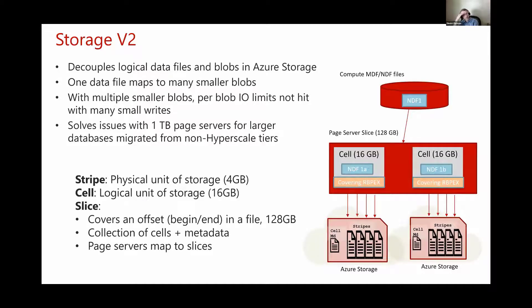Looking at Storage V2 more closely: a database file (MDF or NDF) is split into multiple 128 gigabyte slices. Each slice consists of cells, where a cell is 16 gigabytes. In turn, each cell consists of four stripes, and a stripe is actually a blob in Azure Storage. So instead of just one 128 gigabyte blob, we will have dozens of stripes — much smaller, yet each one still provides the same amount of IOPS as a single blob. This is what solves the IOPS limit problem for larger databases, especially those with one-terabyte page servers.